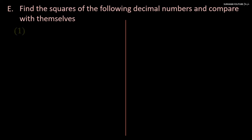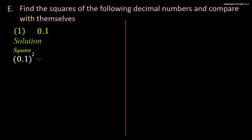Question E says: find the square of the following decimal numbers and compare with themselves. Problem number 1: 0.1. To find the square of 0.1, we multiply 0.1 two times, or by the simple fraction method you can find the square value easily.